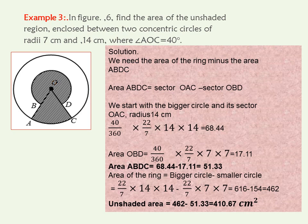Therefore, the area of ABDC will be 68.44 centimeters squared minus 17.11 centimeters squared, and that will give you 51.33 centimeters squared. From there, we get the area of the ring. The ring is the area between the outer circle and the inner circle. This area will be given by the bigger circle minus the smaller circle. That gives us 22 over 7 times 14 times 14 minus 22 over 7 times 7 times 7. That gives you 616 for the bigger circle minus 154 centimeters squared for the smaller circle, giving you 462 centimeters squared.